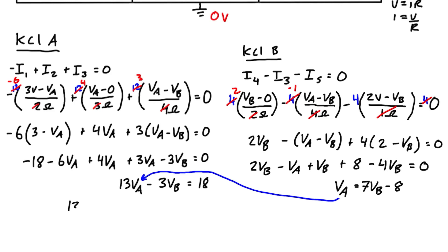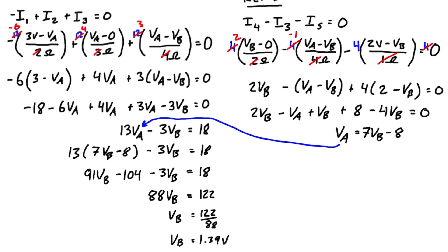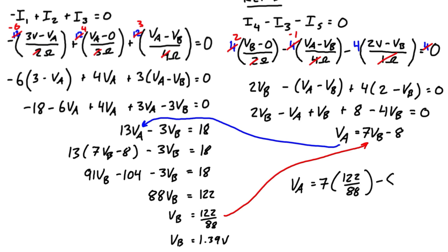We substitute Va = 7Vb − 8 into the node A equation: 13(7Vb − 8) − 3Vb = 18. Simplifying gives Vb = 122/88, which is approximately 1.39 volts. Plugging back in: Va = 7 × (122/88) − 8, which gives Va equal to approximately 1.70 volts.